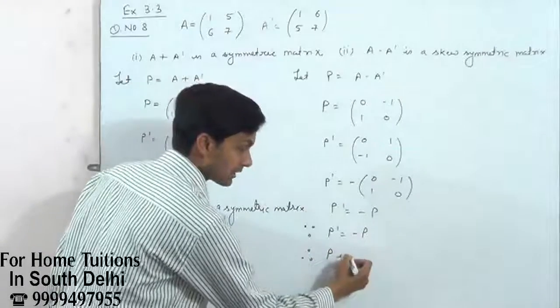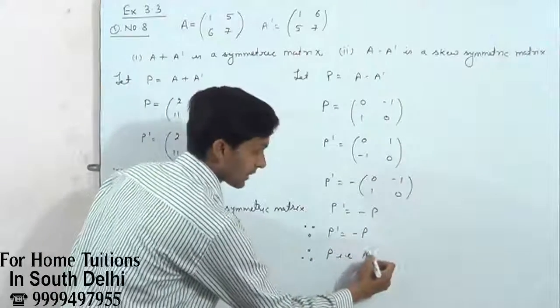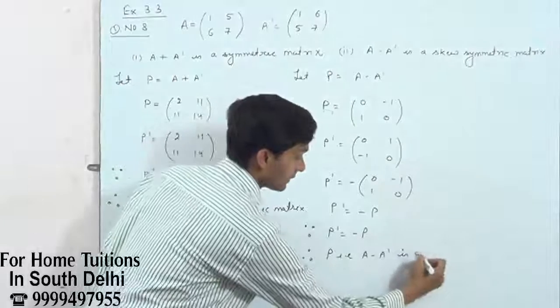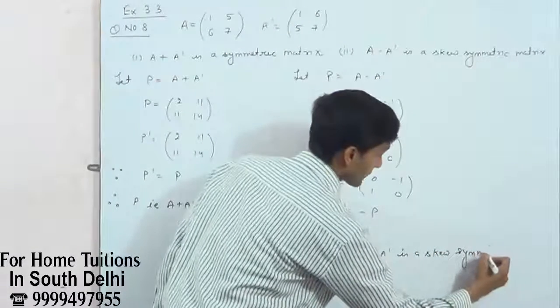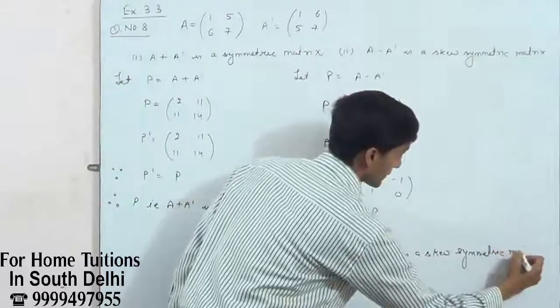P, that is A minus A dash, is a skew-symmetric matrix.